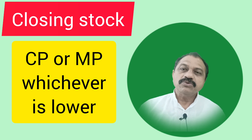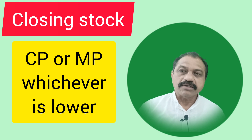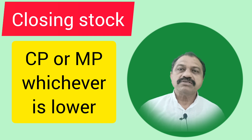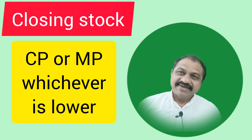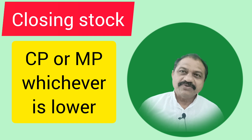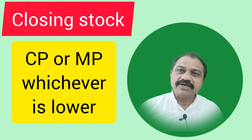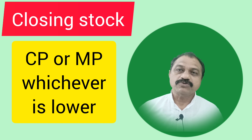And that rule is: cost price or market price, whichever is lower. By considering the possible losses, the lowest of the two — that is cost price or market price — should be taken as the value of the closing stock. The lowest price should be taken as the value of closing stock.